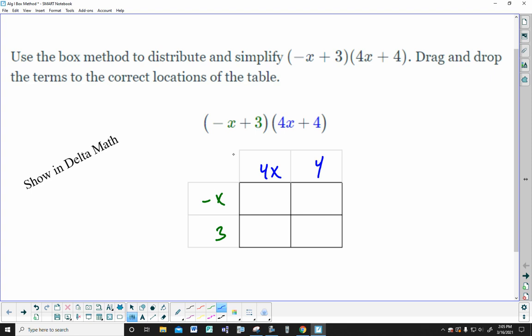Now it doesn't matter if I go the green down and the blue across or vice versa, meaning I could go the blue down on the side and the green across the top. I'm not trying to confuse you by doing that. I'm just saying, which one's across the top and which one's down the side doesn't matter. I'll just go back to the way I originally had it.